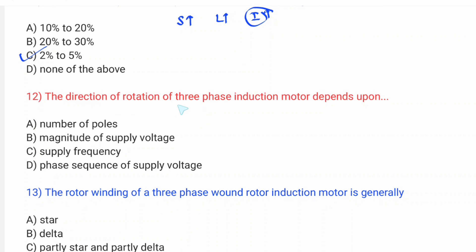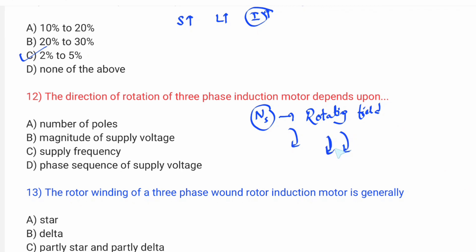Next question: the direction of rotation of a three-phase induction motor depends on what? Direction of rotation depends on the rotating stator field direction. The rotor always follows in the same direction as the stator field. Supply voltage magnitude and supply frequency do not change the direction — but phase sequence does.